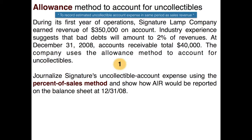The first thing we need to figure out is what our bad debt is — what are we assuming we're not going to collect? The bad debt would be based on $350,000 in revenues earned on account. We didn't receive them yet in cash, and based on industry experience, 2% will not be collected. That means about $7,000 we will never see.